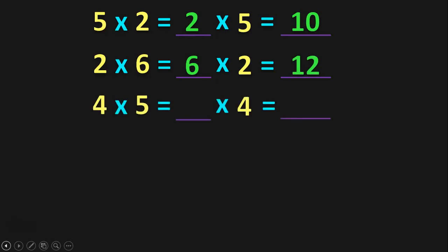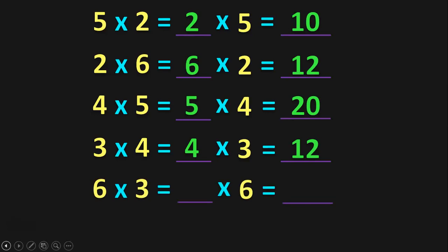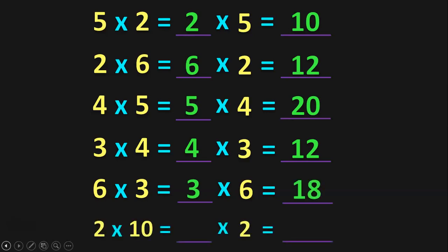4 into 5 is equal to dash into 4. 4 into 5 is equal to 5 into 4 and the product will be 20. 3 into 4 is equal to dash into 3 — the answer is 4, and the product of 3 into 4 or 4 into 3 is 12. Next, 6 into 3 is equal to dash into 6 — 6 into 3 is equal to 3 into 6 and the product will be 18. The last sum: 2 into 10 is equal to dash into 2. I have framed the questions keeping in mind that the children know 2, 5, 10, 3, 4, and 6 tables. 2 into 10 is equal to 10 into 2 and the product will be 20.